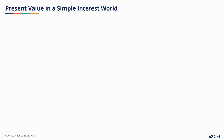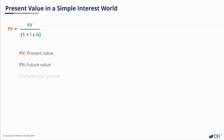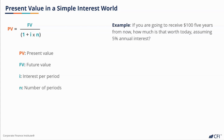Reversing the equation above, you get PV equals FV divided by 1 plus I times N, where PV is present value, FV is future value, I is interest per period, and N is the number of periods. Using a new example, if you are going to receive $100 five years from now, how much is that worth today, assuming 5% annual interest? FV in this case would be 100, I is 5%, and N is 5 years. The PV would be $80.